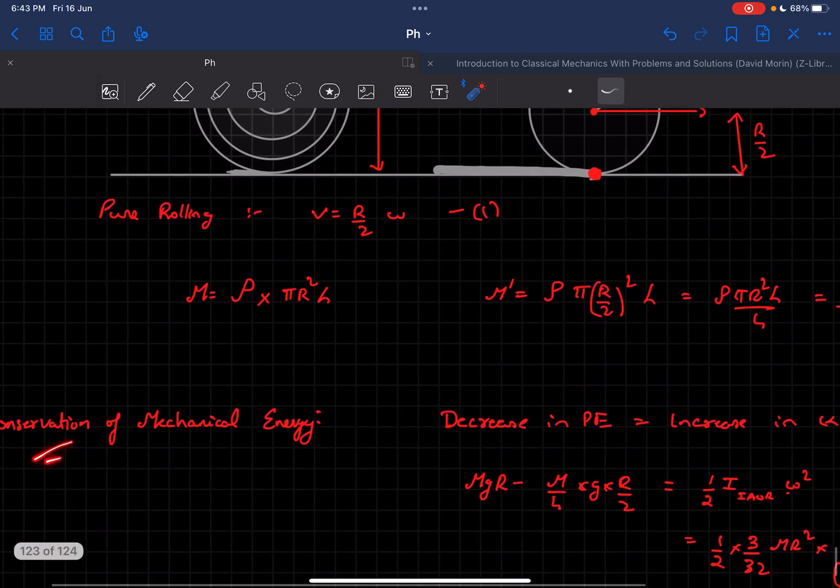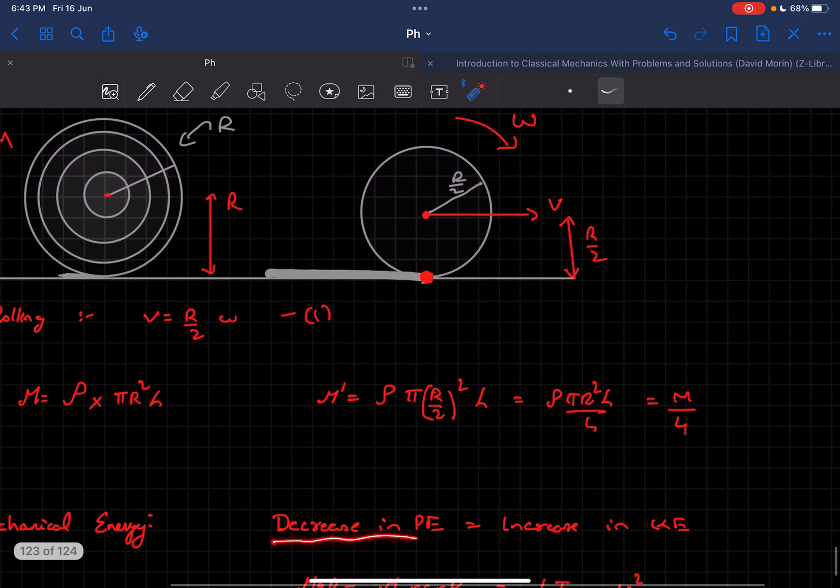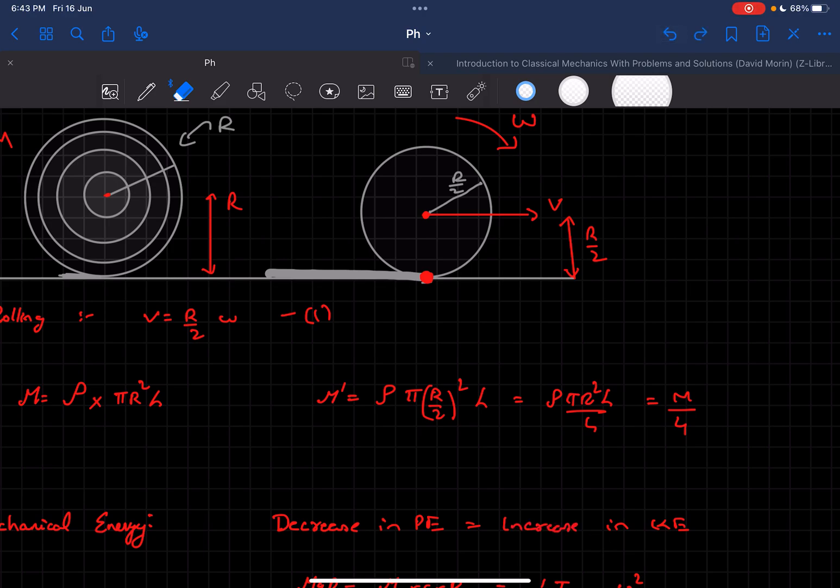Applying the basic conservation of mechanical energy principle, we can say that decrease in potential energy of the cylinder would be equal to increase in kinetic energy of the carpet.